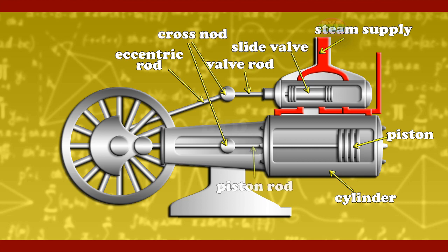Piston rod: the piston rod is the part which transmits the force and the movement of the cylinder to the outside. The tip of the piston rod generally has a thread so that other customer components can be attached to it. Connecting rod: it is a cast iron part which helps to convert the reciprocating motion of the piston into rotary motion of the crank.